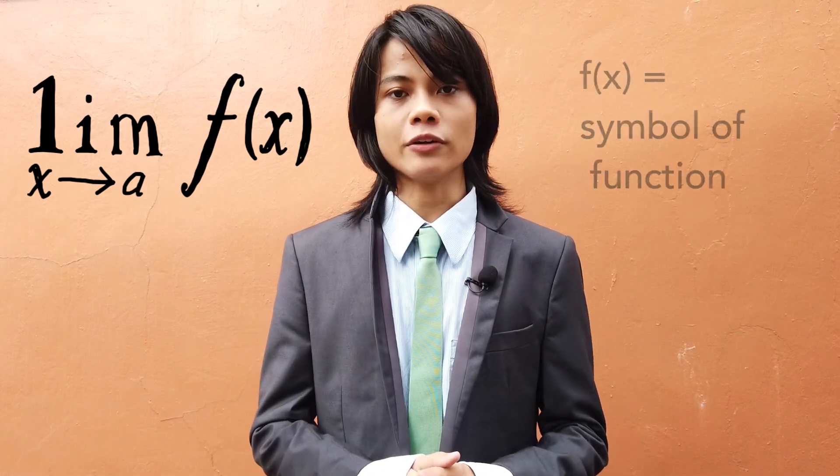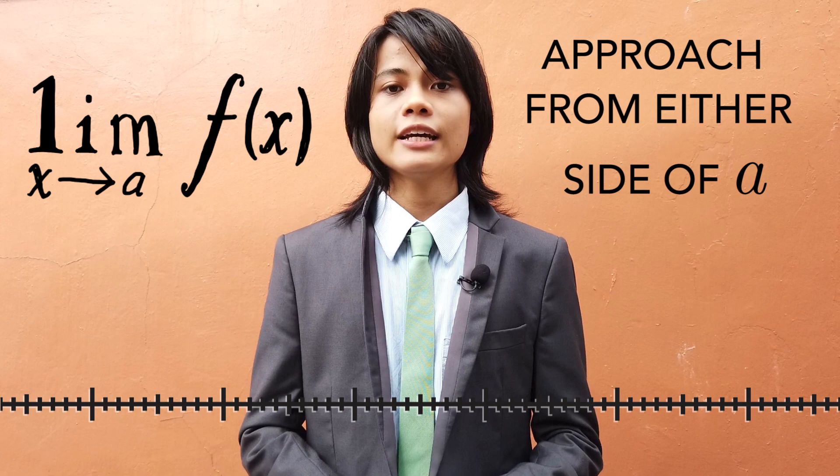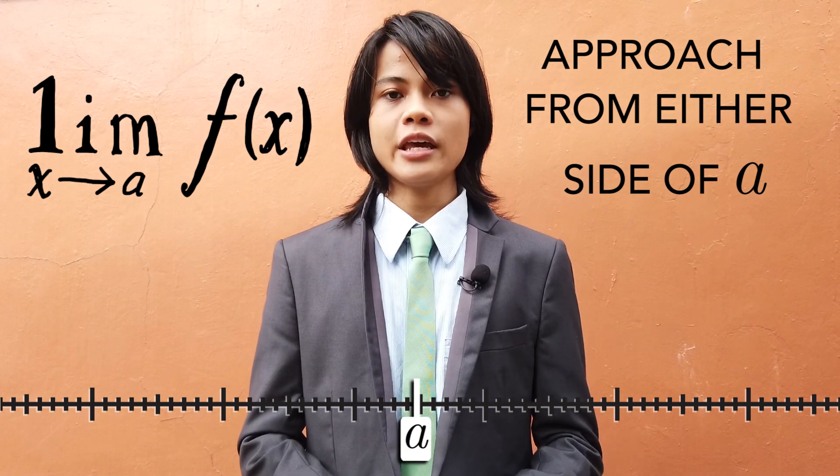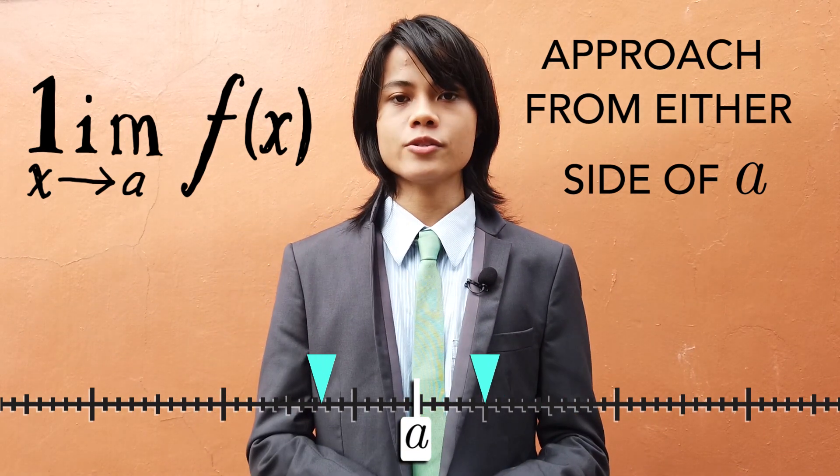There are two important things to note about limits. First, is that the limit at a only exists if it is approached from both sides of the number a in question.